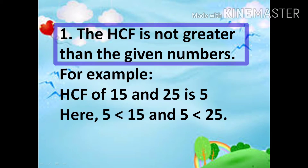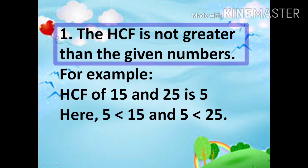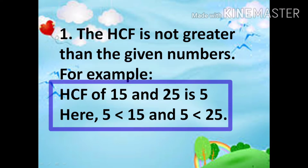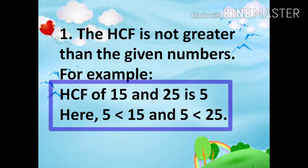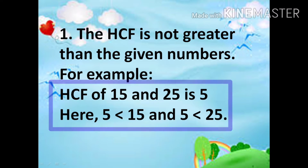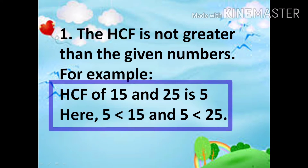The HCF is not greater than the given numbers. For example, HCF of 15 and 25 is 5. Here, 5 is less than 15 and 25.